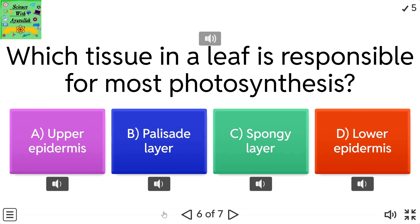Which tissue in a leaf is responsible for most photosynthesis? A: upper epidermis. B: palisade layer. C: spongy layer. D: lower epidermis.